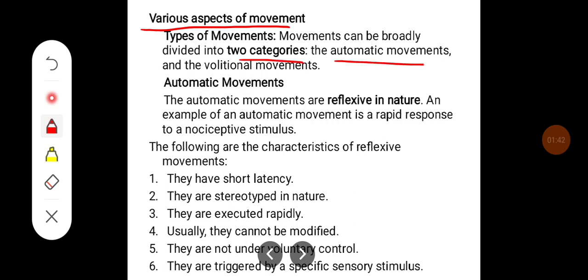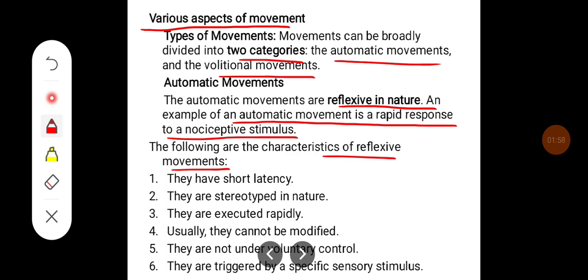Movements can be broadly divided into two categories: automatic movements and volitional movements. Automatic movements are reflexive in nature — an example is a rapid response to a nociceptive stimulus. The characteristics of reflexive movements are: they have a short latency, they are stereotyped in nature, they are executed rapidly, usually they cannot be modified, they are not under voluntary control, and they are triggered by a specific sensory stimulus.